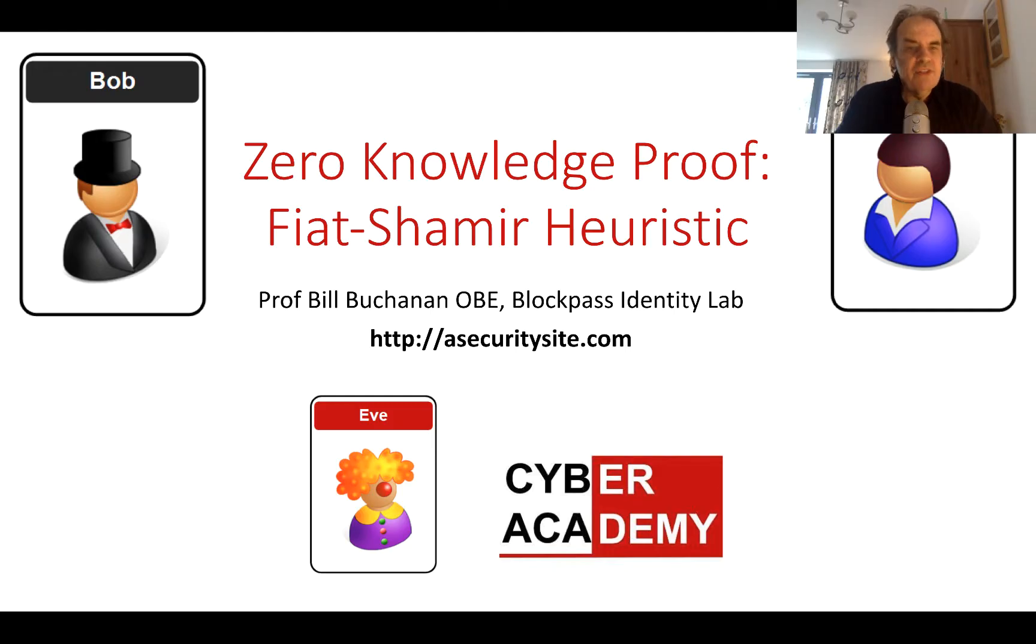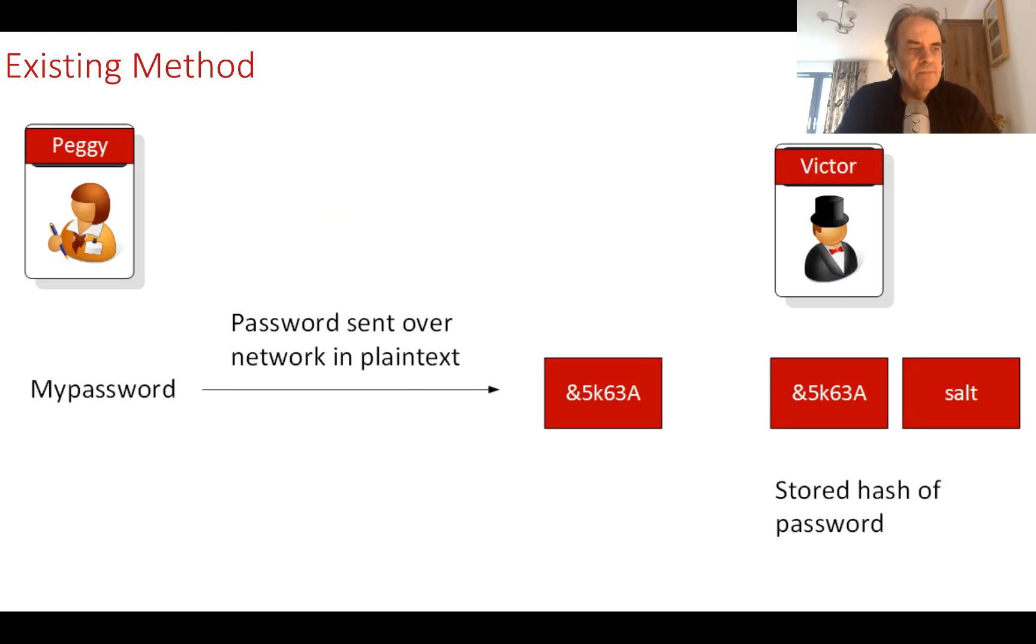The existing system that we have for storing shared secrets is typically flawed. The reason it's flawed is because Peggy, in this case the prover, and Victor, the verifier, sends her password over the network.